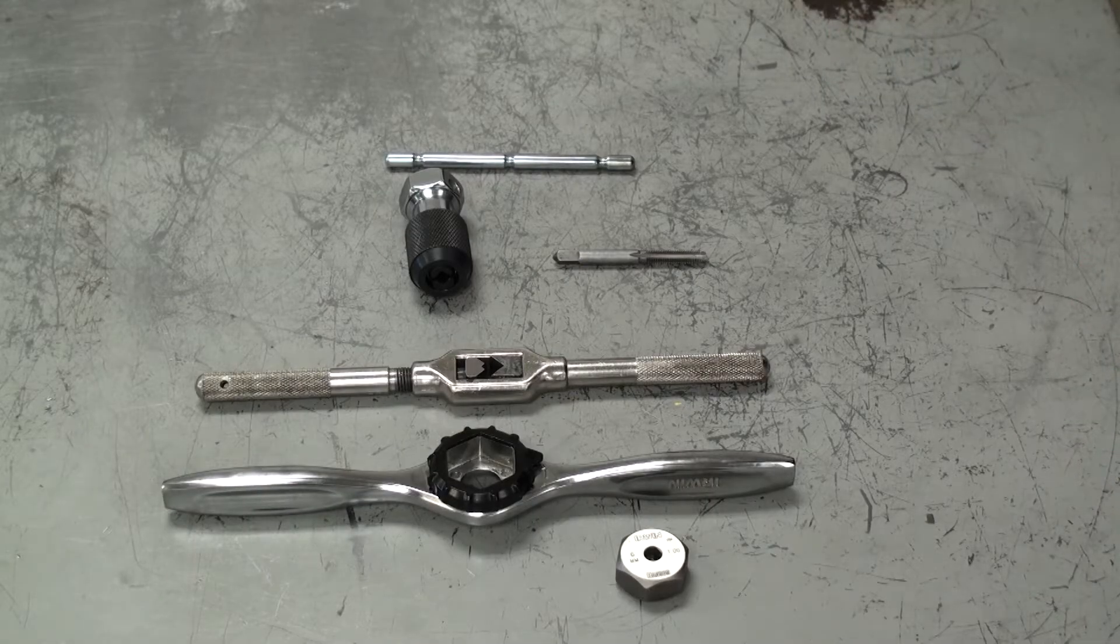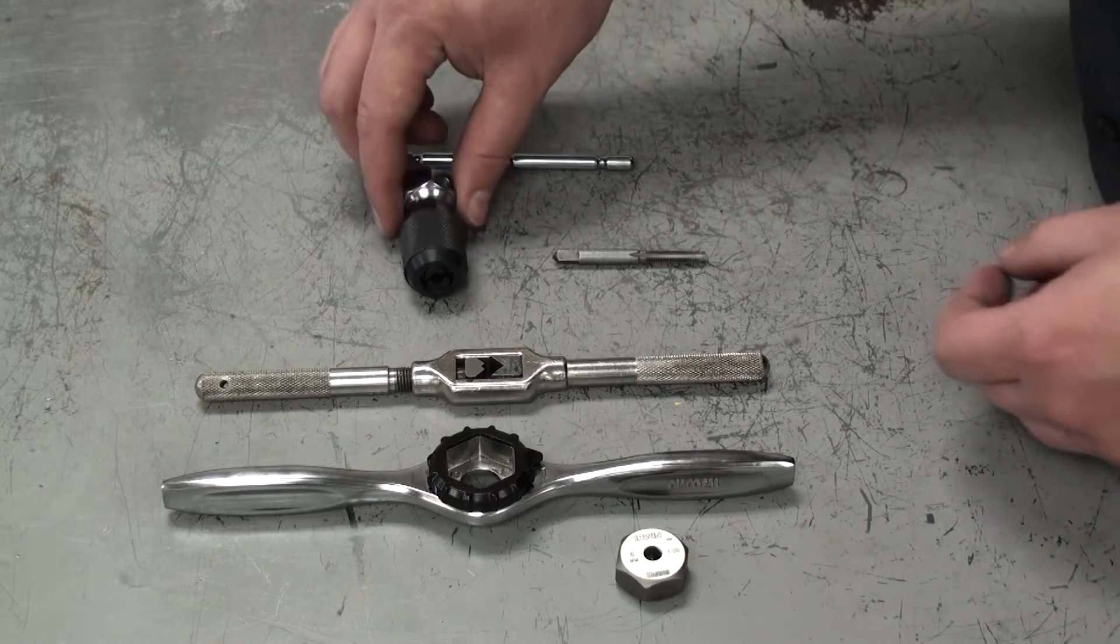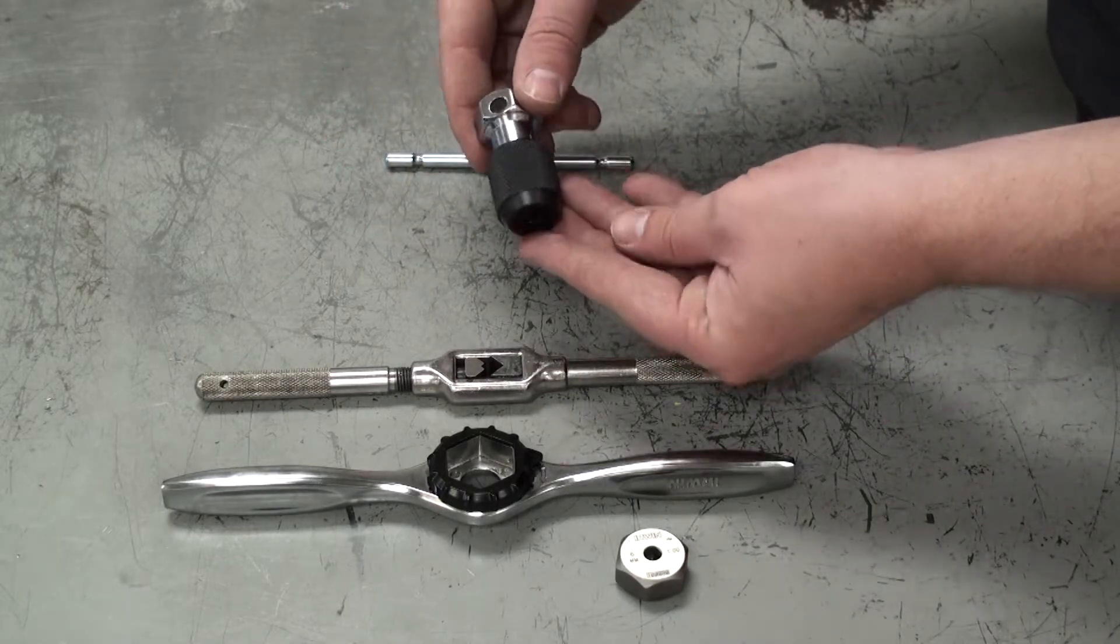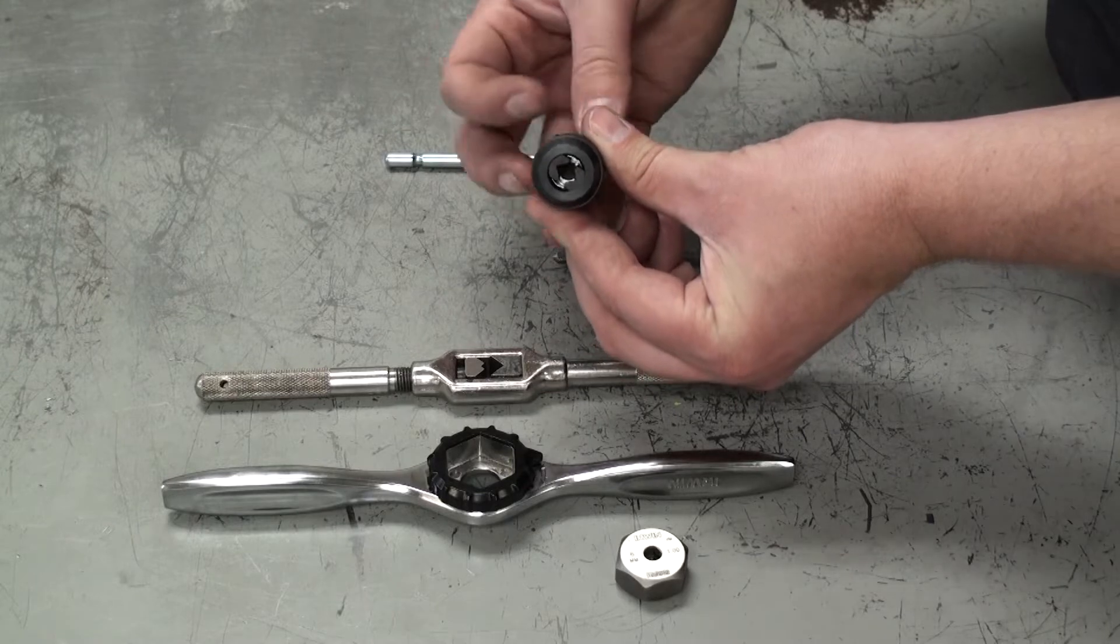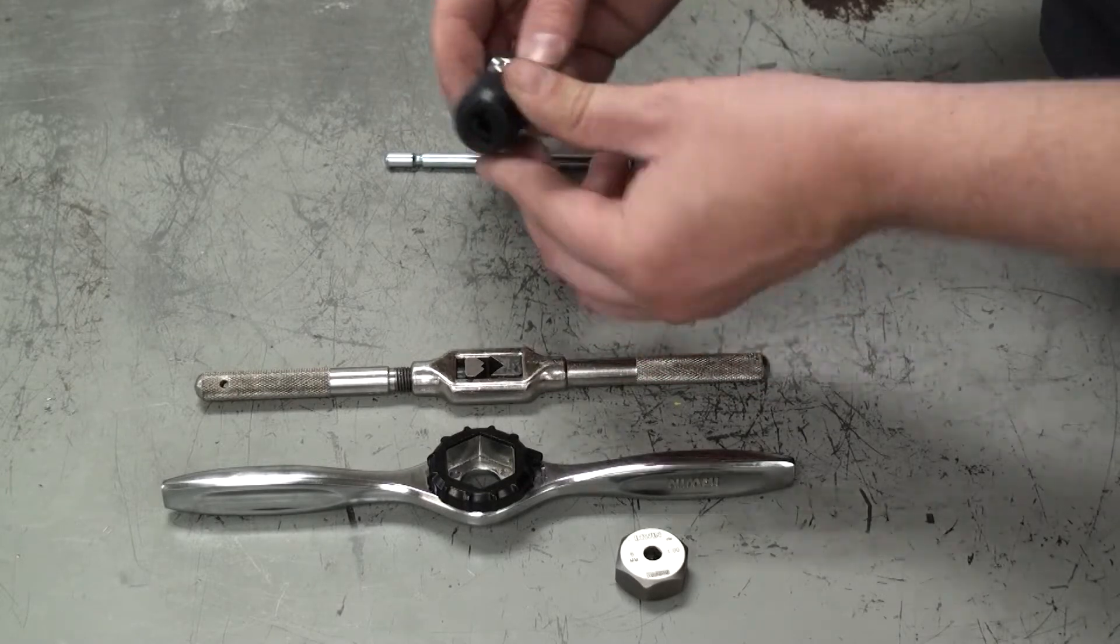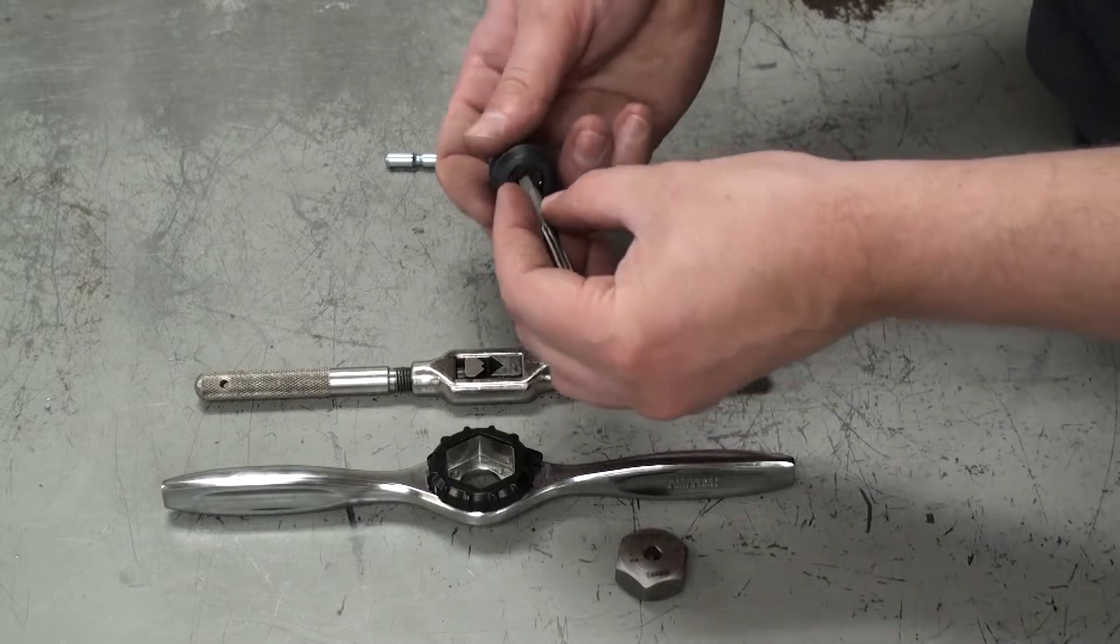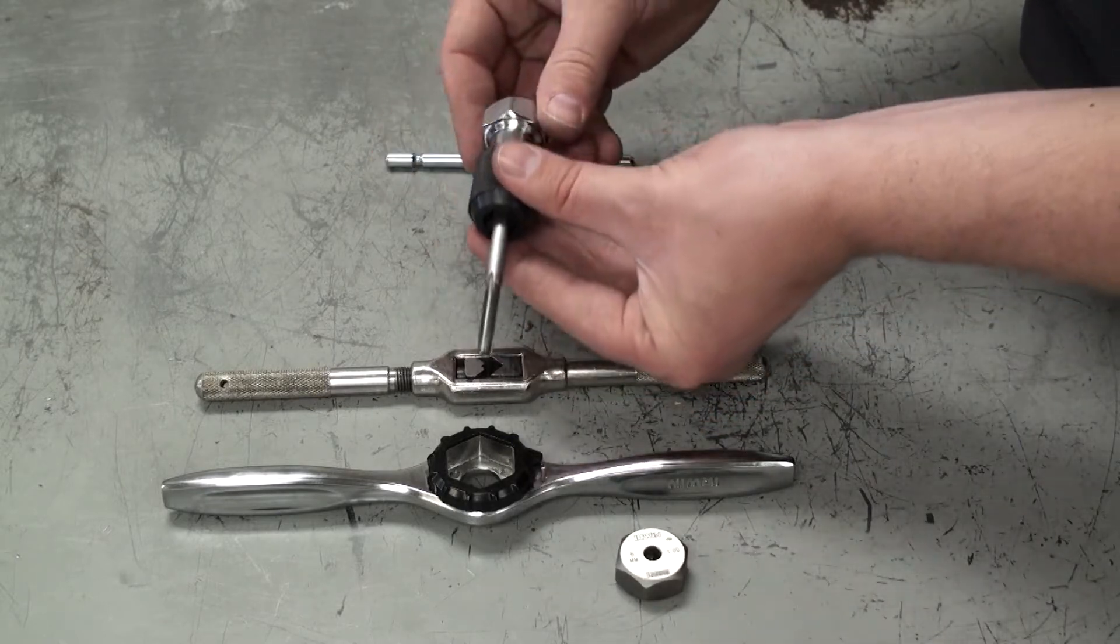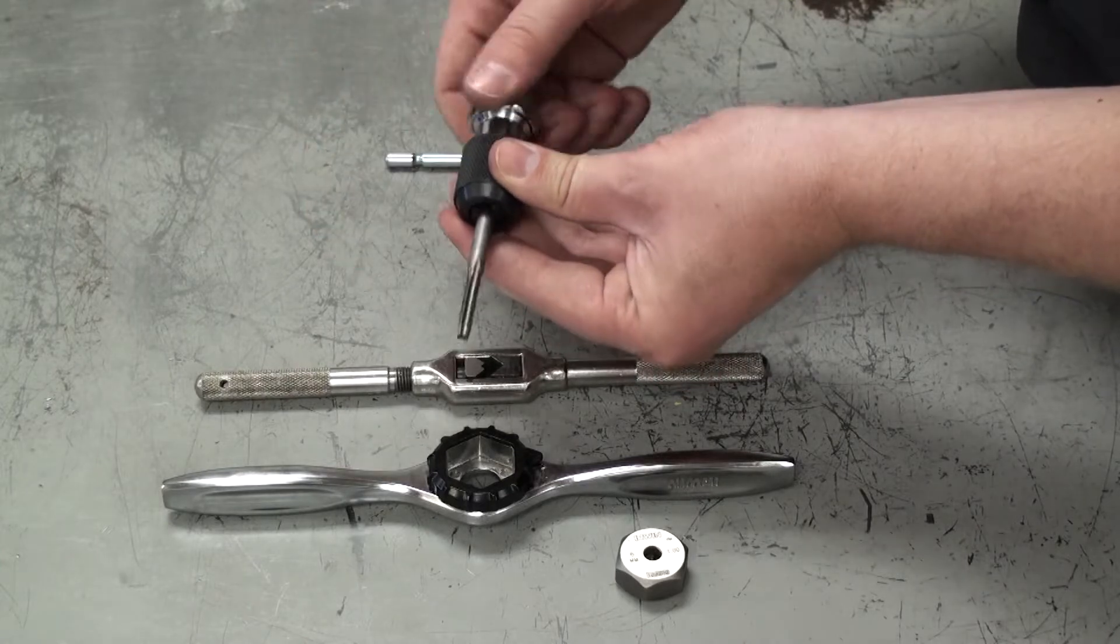Now let's take a look at how to set the handles up for the taps and dies. To start we have this smaller tap holder that has a chuck on it and two clamping metal pieces on the inside. These metal pieces work much like a drill. You just insert the tap and turn it until it tightens down fully.